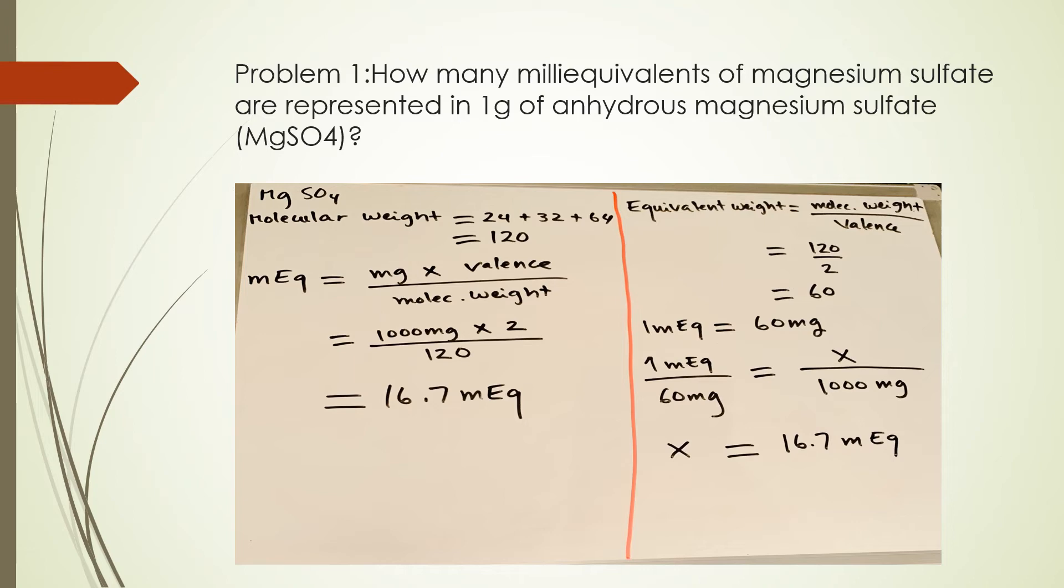Now we can use ratio and proportion to find the milliequivalent of magnesium sulfate. If 1 mEq is 60 milligrams, then 1000 milligrams is x. So we have to find the mEq for 1000 milligrams. X equals 1 times 1000 divided by 60. And your final answer, again, is 16.7 mEq. You can solve this either way. I chose to show you both methods and you can use the one that you prefer.